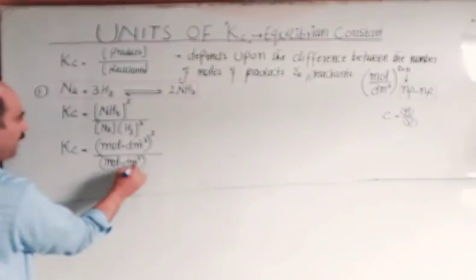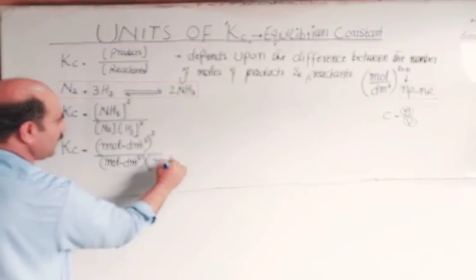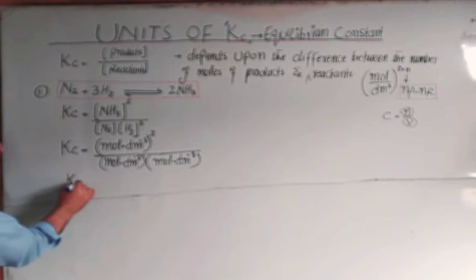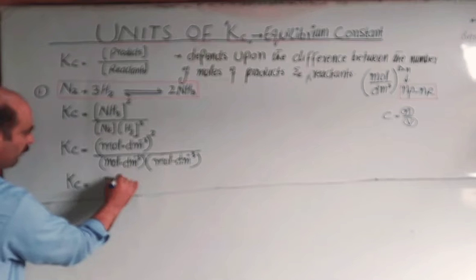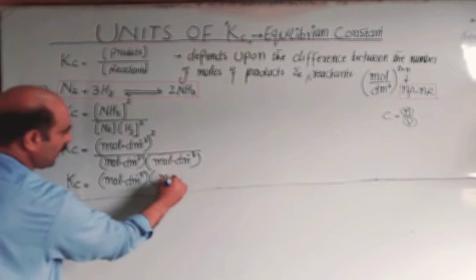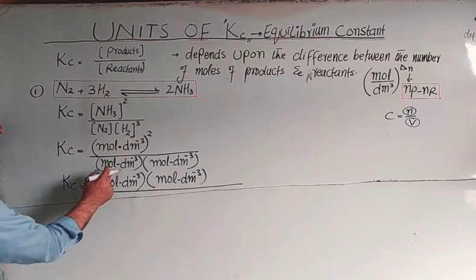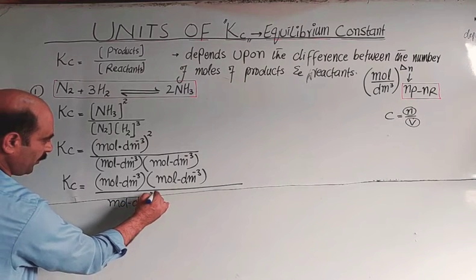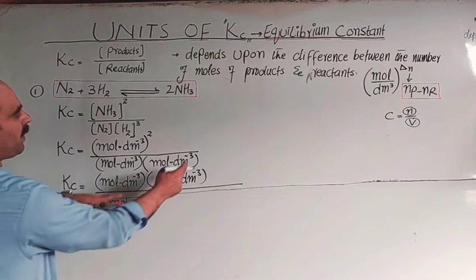Expanding the units: numerator has mole per decimeter cube raised to power two; denominator has mole per decimeter cube multiplied by mole per decimeter cube raised to power three. So denominator becomes mole per decimeter cube to the power four. We then divide numerator by denominator.